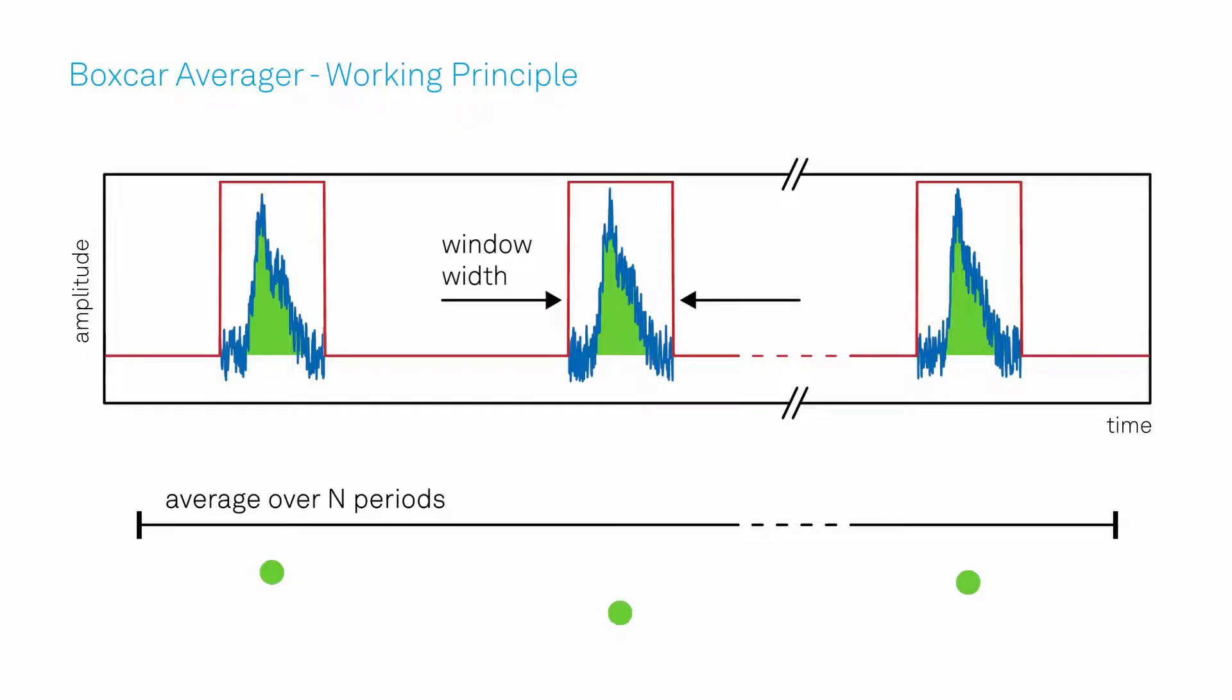Consequently, the two main measurement parameters are the boxcar window width and the number of averaging periods.